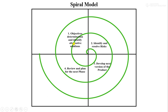The first phase is known as objective determination and identifying alternate solutions. In this first quadrant, we need to identify the objectives of the project and determine the different alternative solutions to solve that problem. So in the first quadrant, we need to identify our objectives and formulate different solutions for solving that problem or achieving that objective.